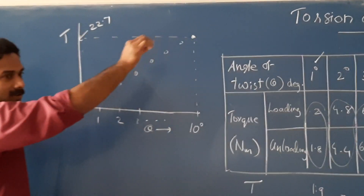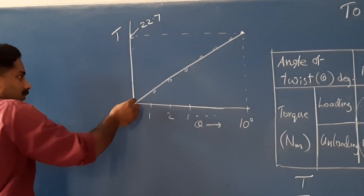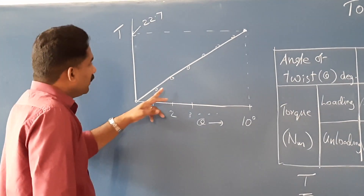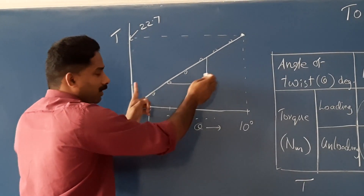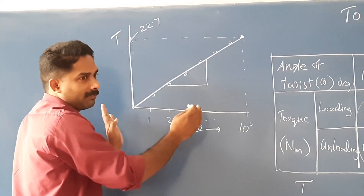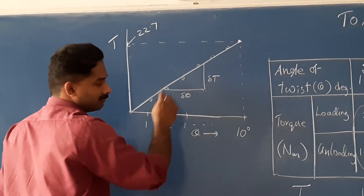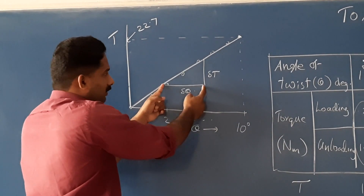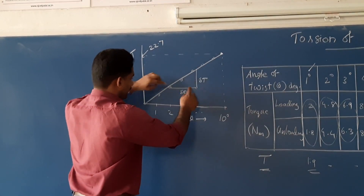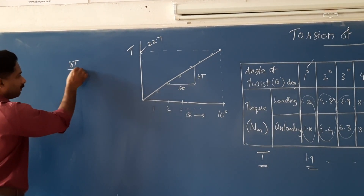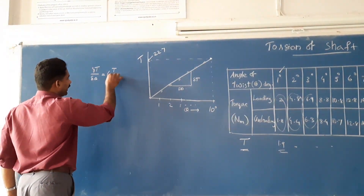You will be getting approximately points lying along a straight line. Connect all the points and draw the best-fit line. You will get a straight line. We can construct a small or even large triangle. That will give delta T and delta theta. This is torque divided by angle — the slope. So delta T by delta theta is equal to T by theta. We need that value for substituting in the equation.